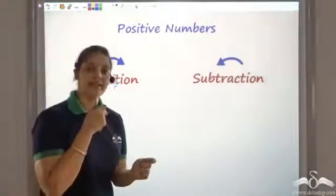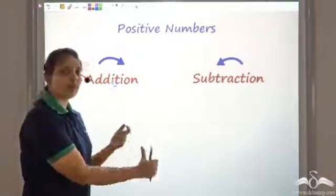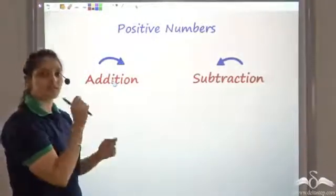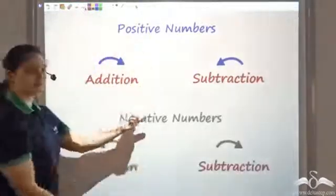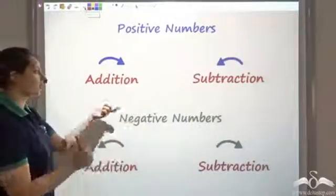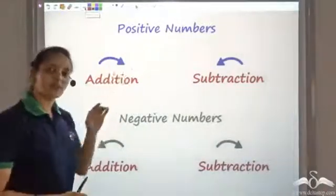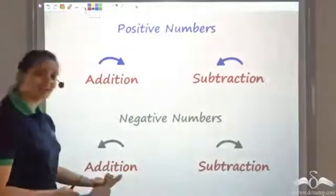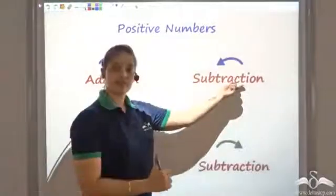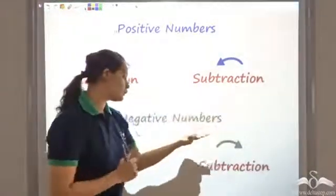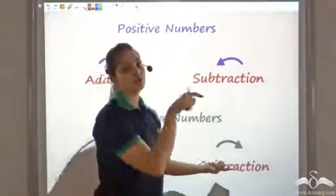A negative number is the same as the positive number but in the opposite direction — just the sign changes. So for negative numbers, I would reverse the direction. If to add positive numbers I move forward, then to add negative numbers I will move backwards. To subtract positive numbers I move back, and to subtract negative numbers I would move forward.